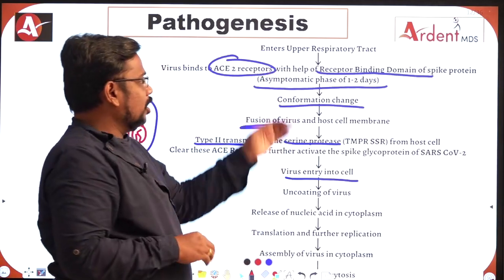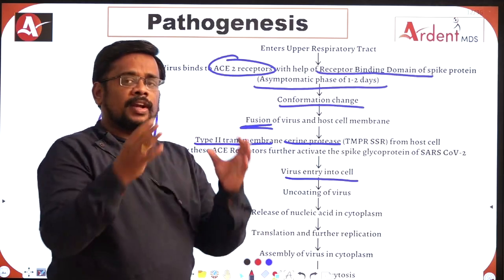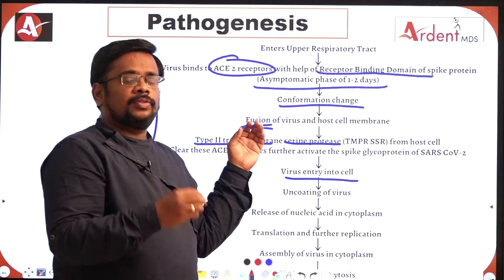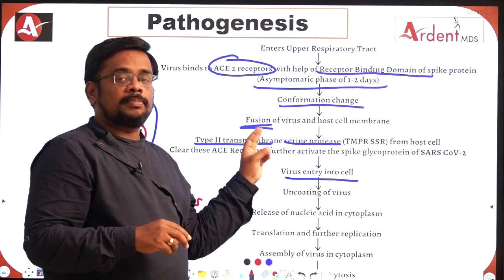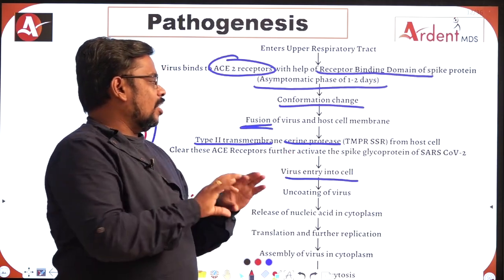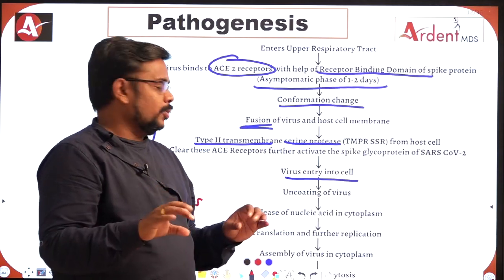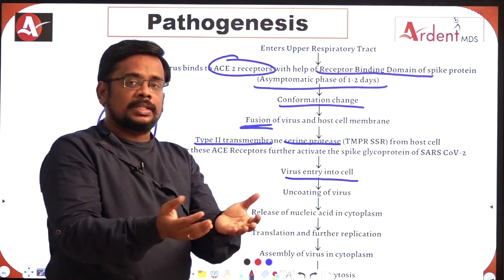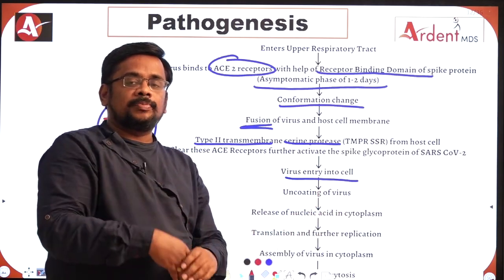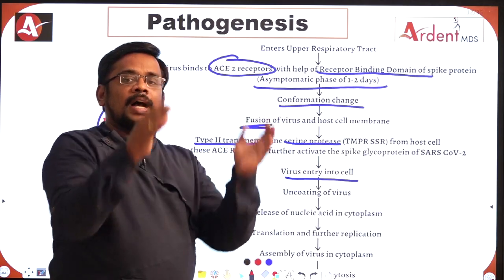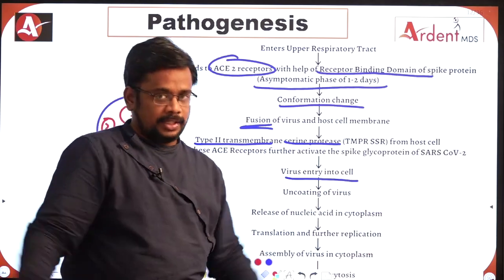To summarize the pathogenesis: the virus enters the upper respiratory tract; in the initial asymptomatic phase of one to two days, it binds with ACE2 receptors; undergoes conformational change; fuses with the host cell membrane; Type 2 Transmembrane Serine Protease is activated; this clears ACE2 receptors and activates spike glycoprotein; the virus enters the cell; uncoating occurs; RNA comes out in the cytoplasm; replication occurs; assembly occurs; exocytosis releases new virions which infect other cells.